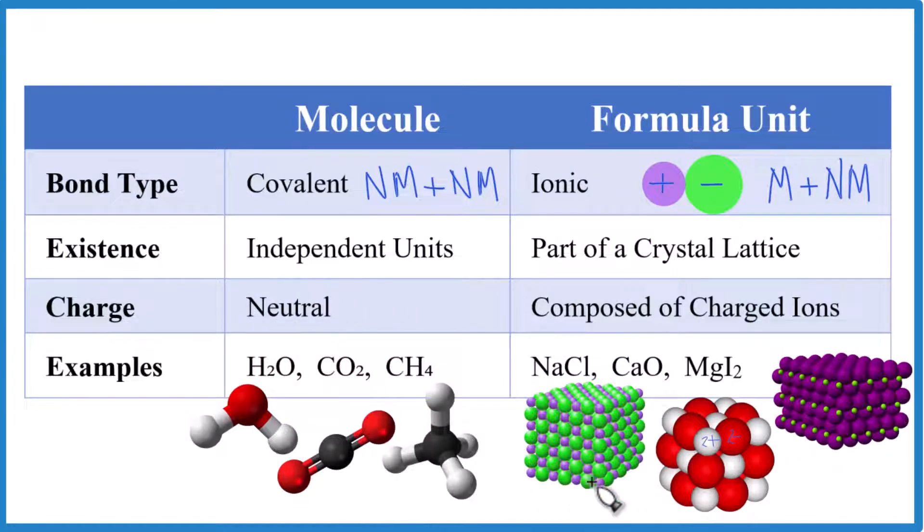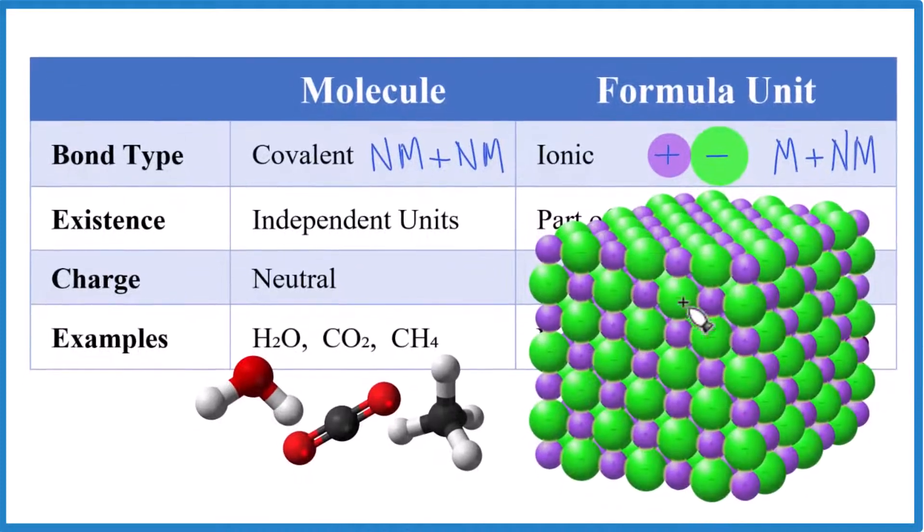Let's take a closer look at NaCl here. So you can see it's made up of a pattern of this repeating formula unit. Sodium, chlorine, sodium, chlorine repeating. That's the crystal lattice we're talking about.